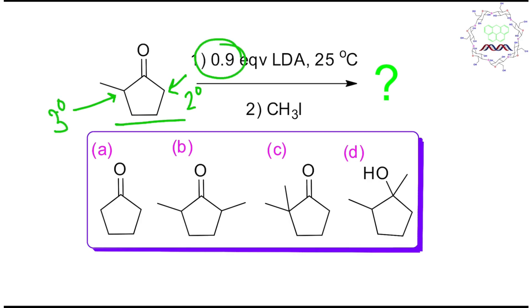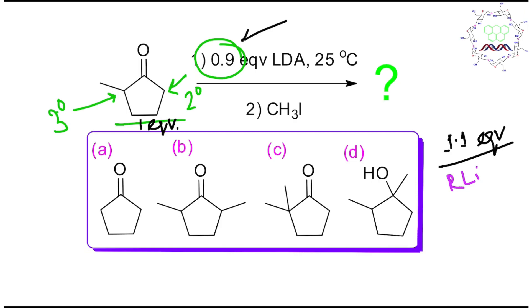So it reacted with 0.9 equivalents of LDA. LDA is a bulky base and hygroscopic — it degrades in the presence of moisture. Such chemicals, like LDA, n-butyl lithium, and Grignard's reagent (alkyl magnesium bromide), are typically taken in slight excess — for example, 1.1 equivalents for a 1 equivalent reaction — because during the reaction some amount of the base can be quenched by moisture. So why is it taken slightly less in this case? That is point number one.